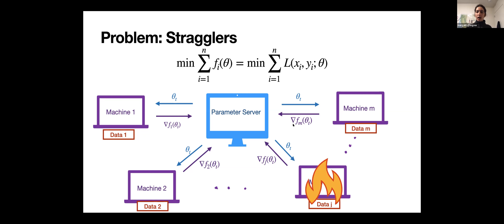One problem that comes up is something called stragglers — machines that are slow or unresponsive. This is very typical when we have many machines; there's always one where something's going on, or maybe more than one, that are slow due to other work or random events affecting their ability to respond quickly. If at every iteration we waited for all machines to respond it would take very long, so instead we want to build some redundant strategy that's robust to stragglers.